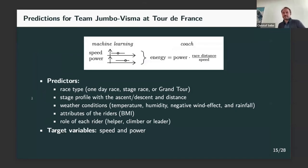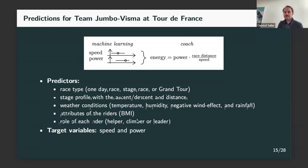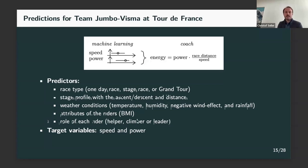The setup was like this: we didn't calculate calorie consumption directly. We calculated two separate variables - speed and power for each rider - that were then combined into a calorie prediction. The predictors were the race type, the stage profile (whether it's a mountain-style race or very flat), weather conditions from the forecast, different attributes about the rider, and the different riding styles. The targets were the speed variable and the power variable that we wanted to predict.